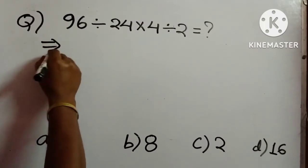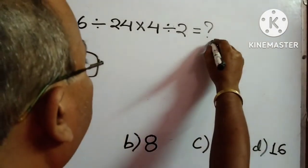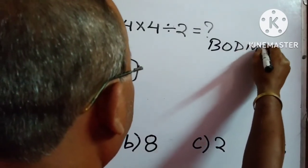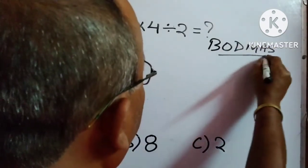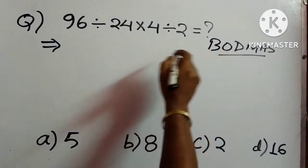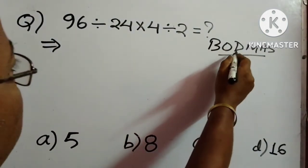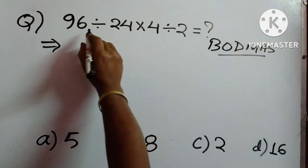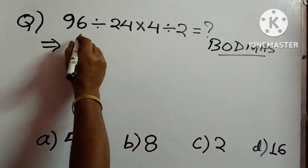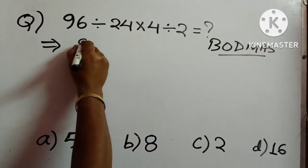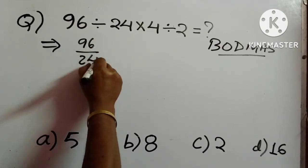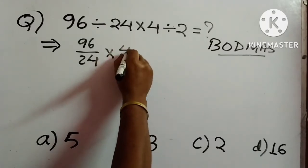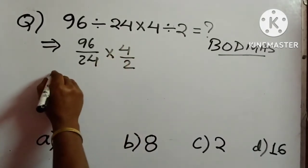Again, to solve this one, we will always remember this rule BODMAS as I have explained in the earlier question. So accordingly, division is before multiplication. So we have to divide first. So 96 by 24 into, again we have to divide first. So 4 by 2.